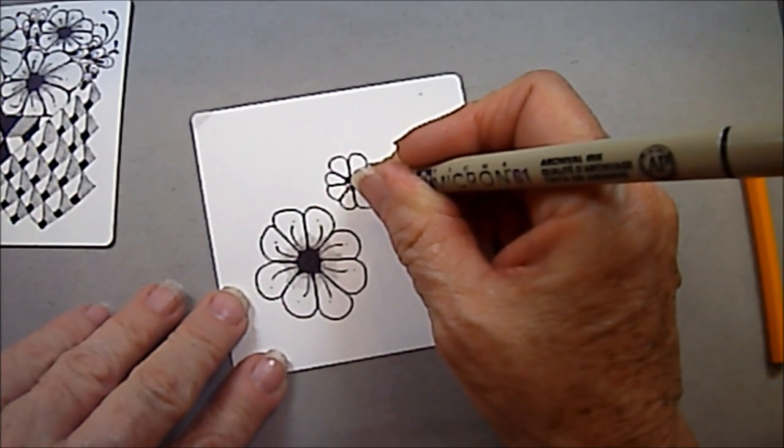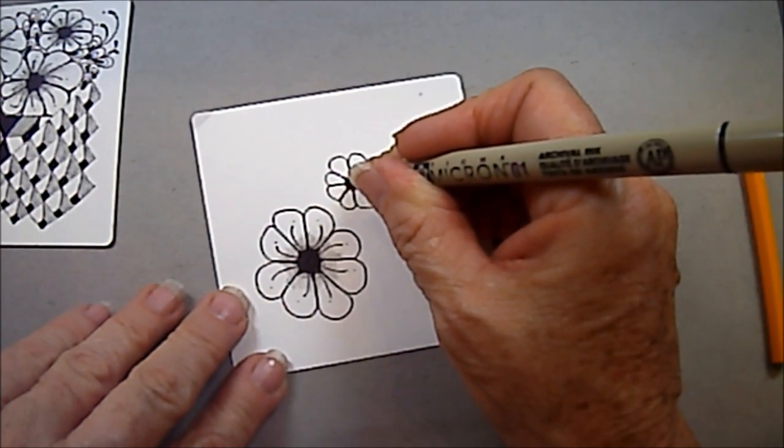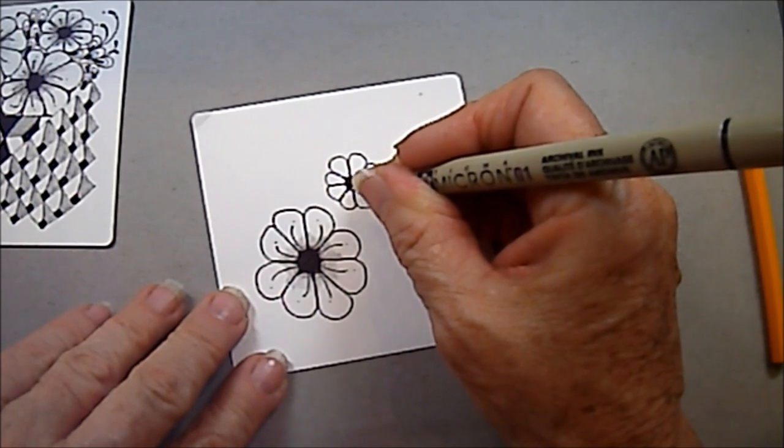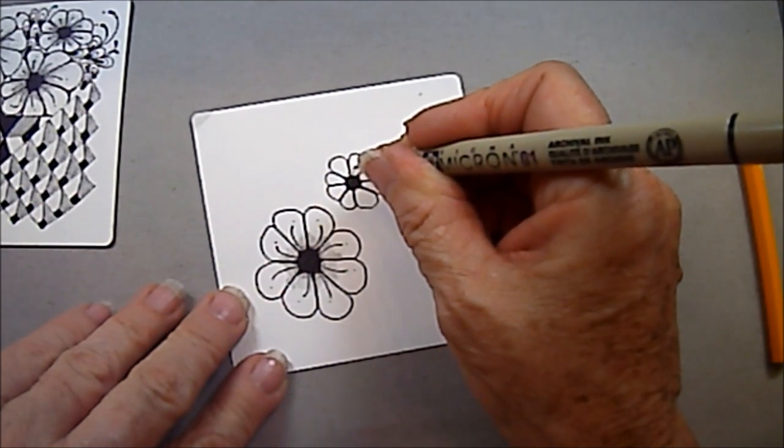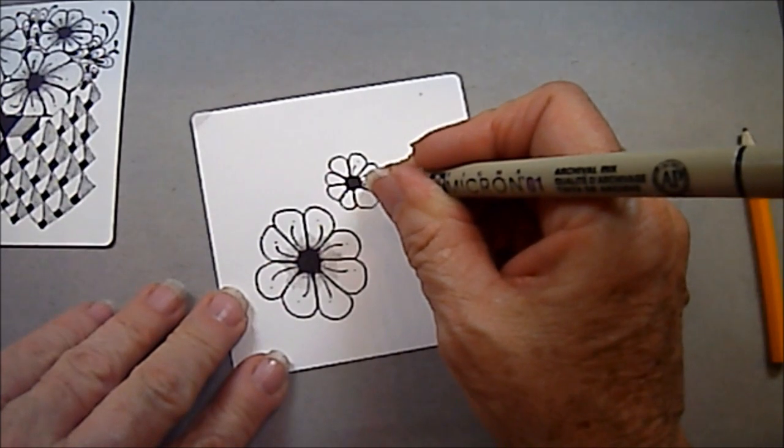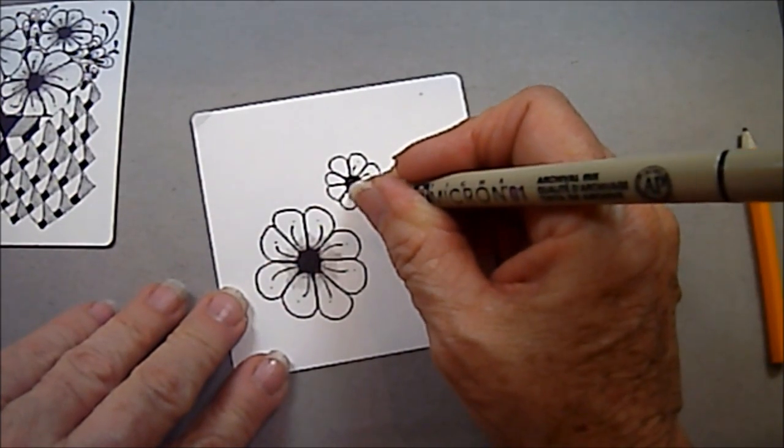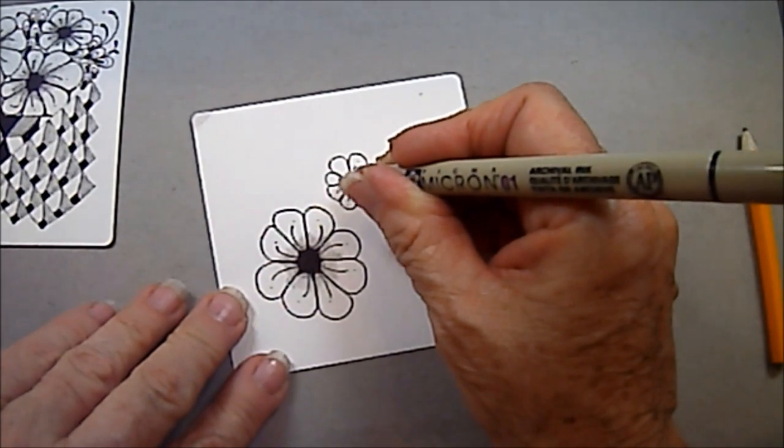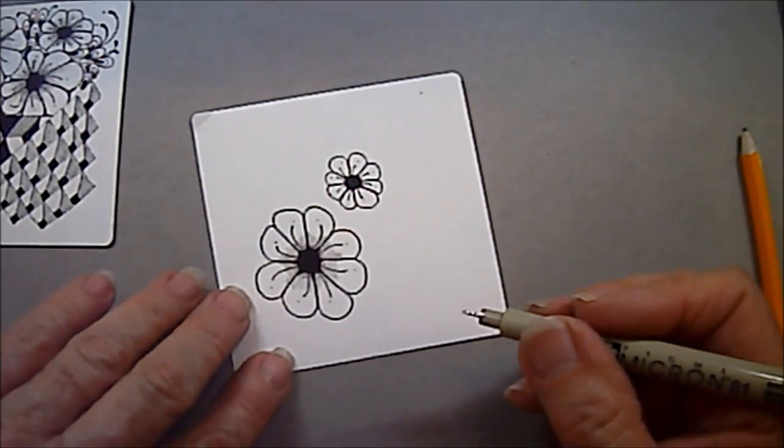Easy step-outs will be on my blog, inkadoodles.com. And also a template for the words, Be Joyful, will be on the blog also.